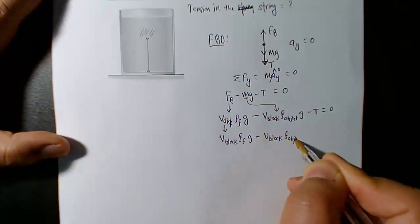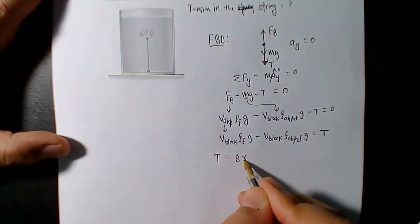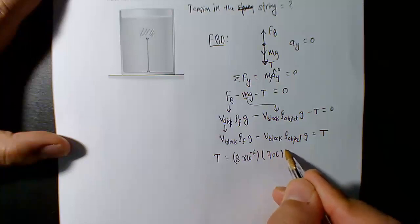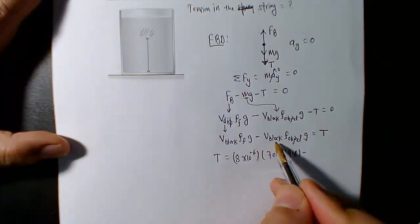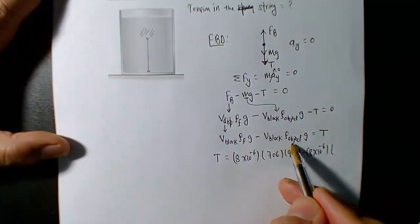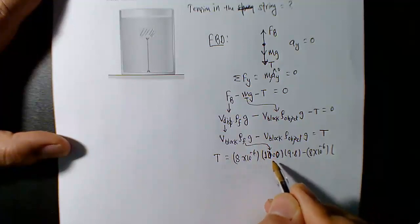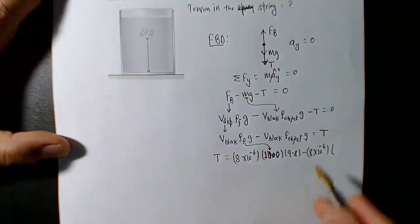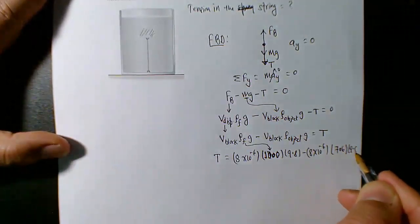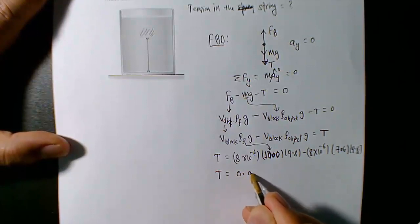Solving for tension: T = V_block × ρ_fluid × g − V_block × ρ_object × g. Volume is 10⁻⁶ m³ (as given), density of fluid (water) is 1000 kg/m³, density of the wooden block is 706 kg/m³, and g = 9.8. That gives the tension in the string holding it down.